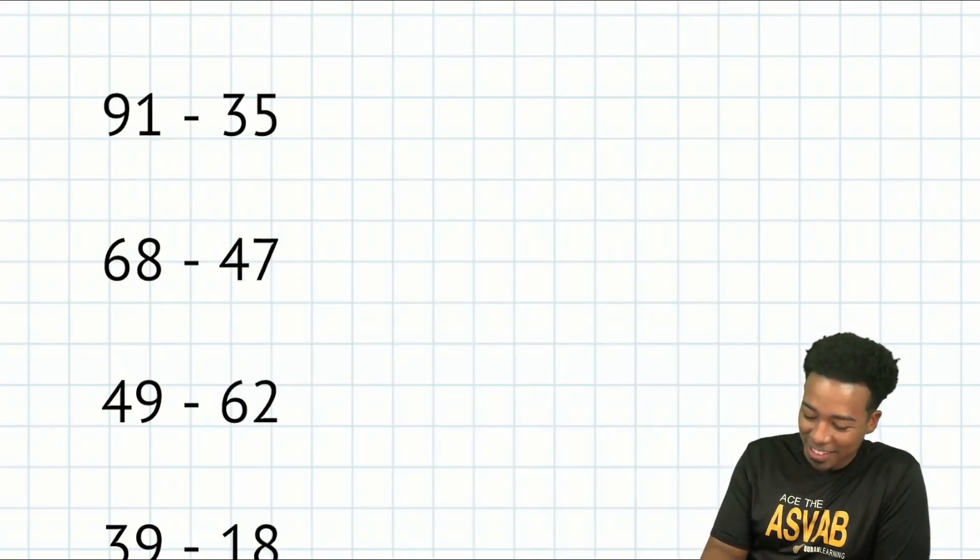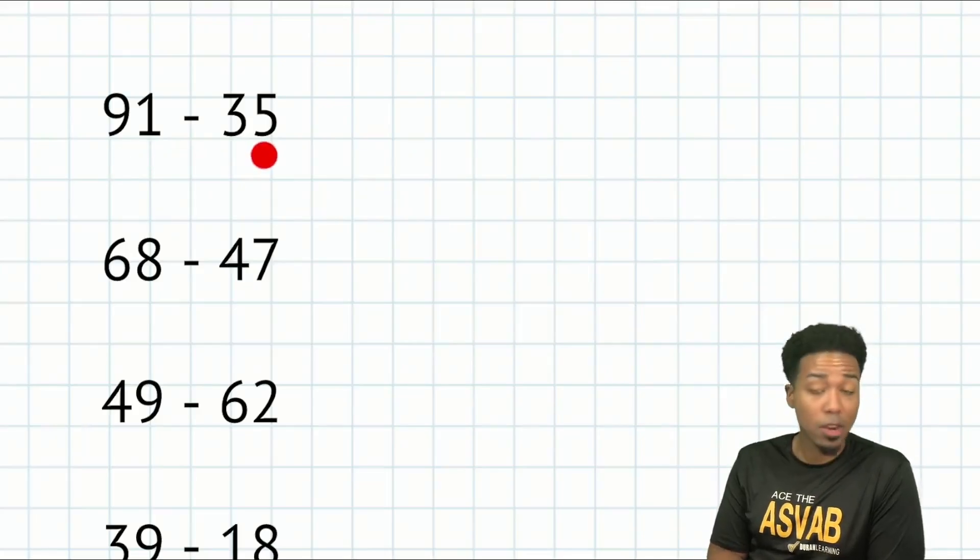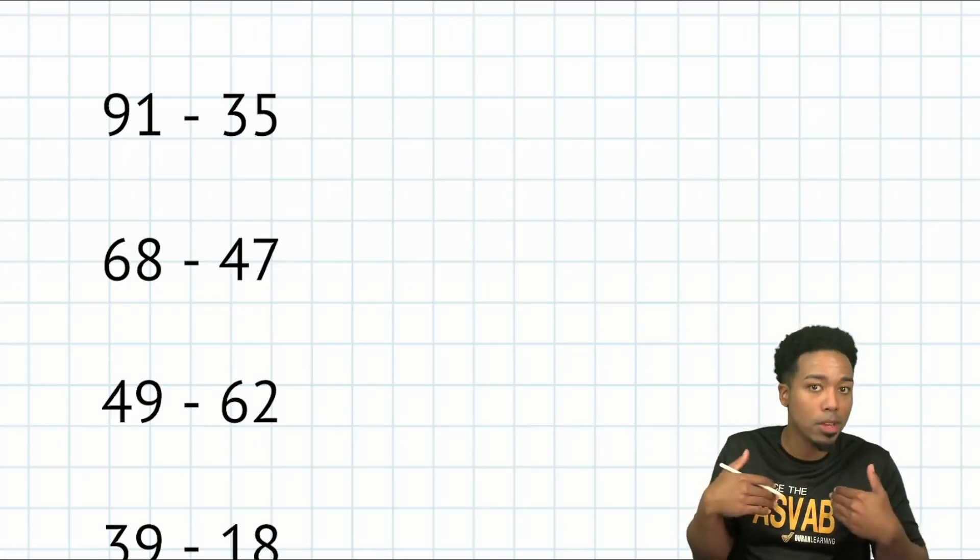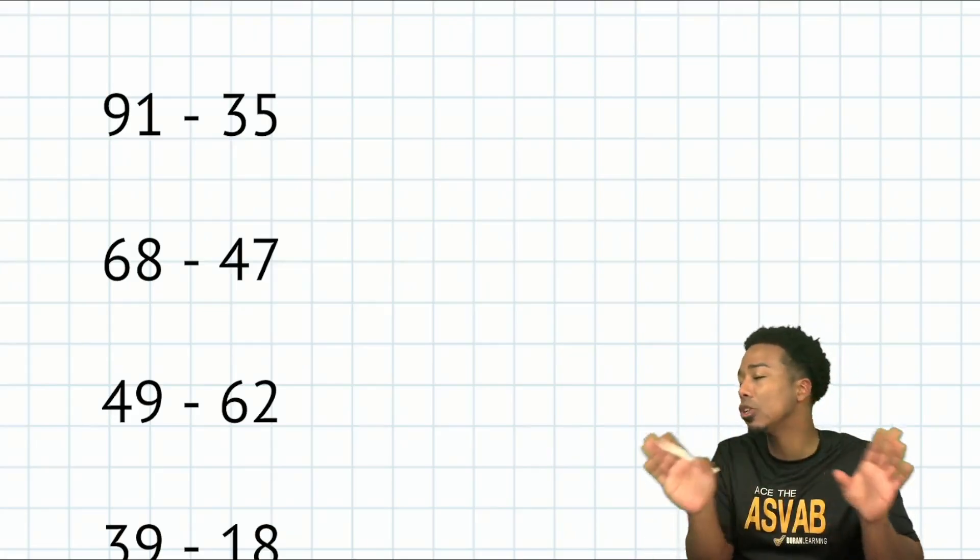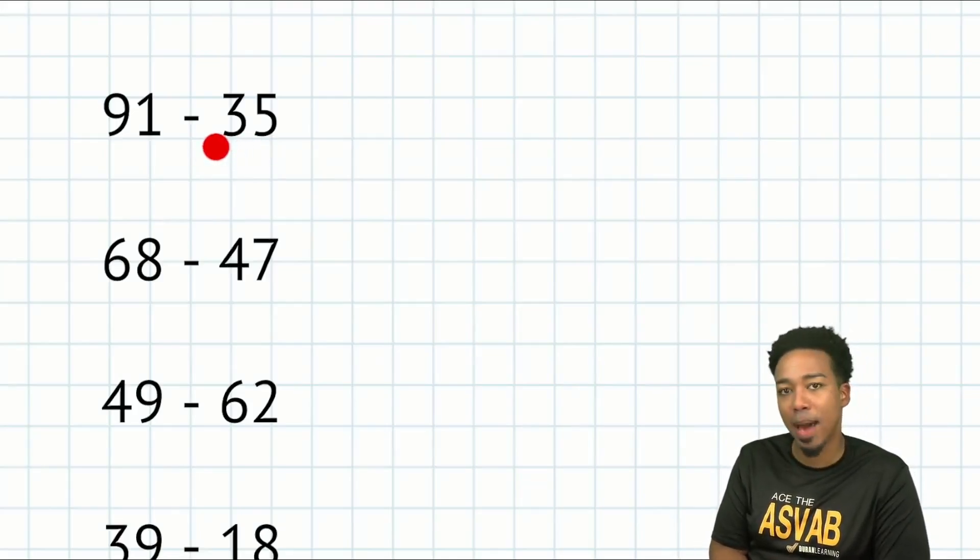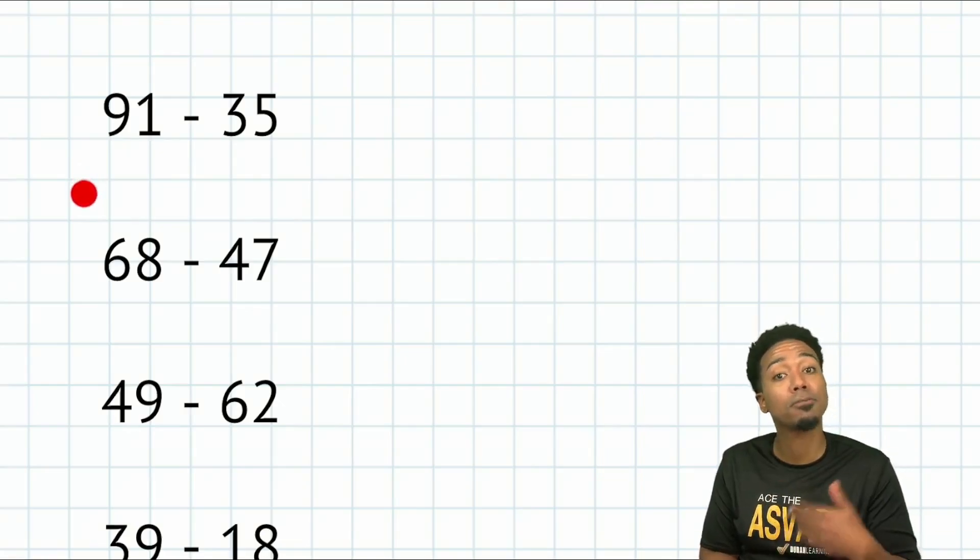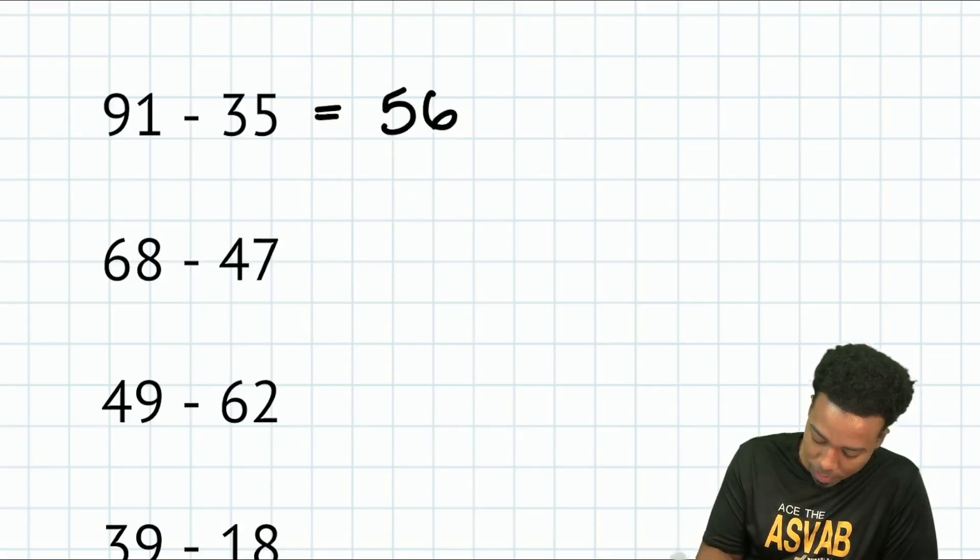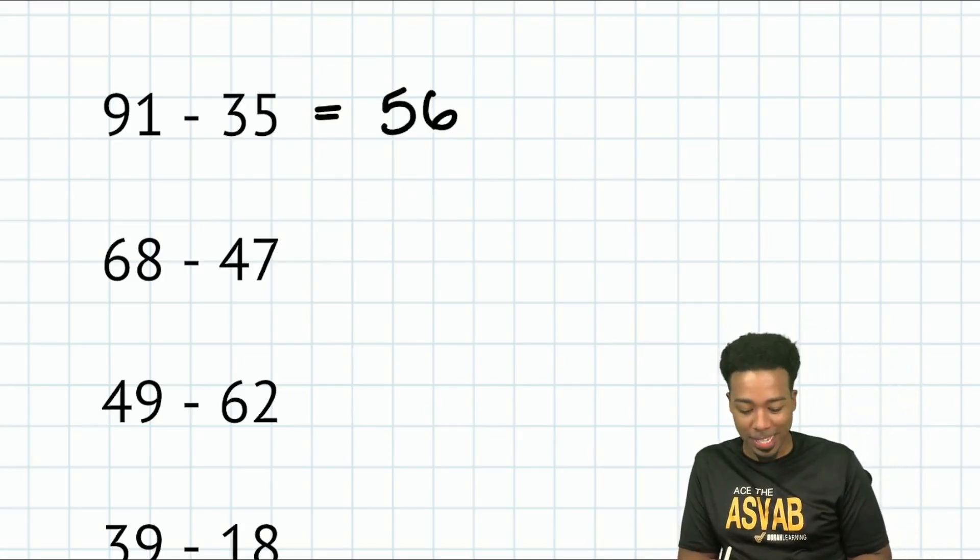Next up, we have 91 minus 35. Here we can just take away 30, take away five, or take away 40 and then add five back. Either way is fine. I'll just take away 40 and then add five back. 91 minus 40 is 51. Add five back is 56. That's how it's done, my party people.